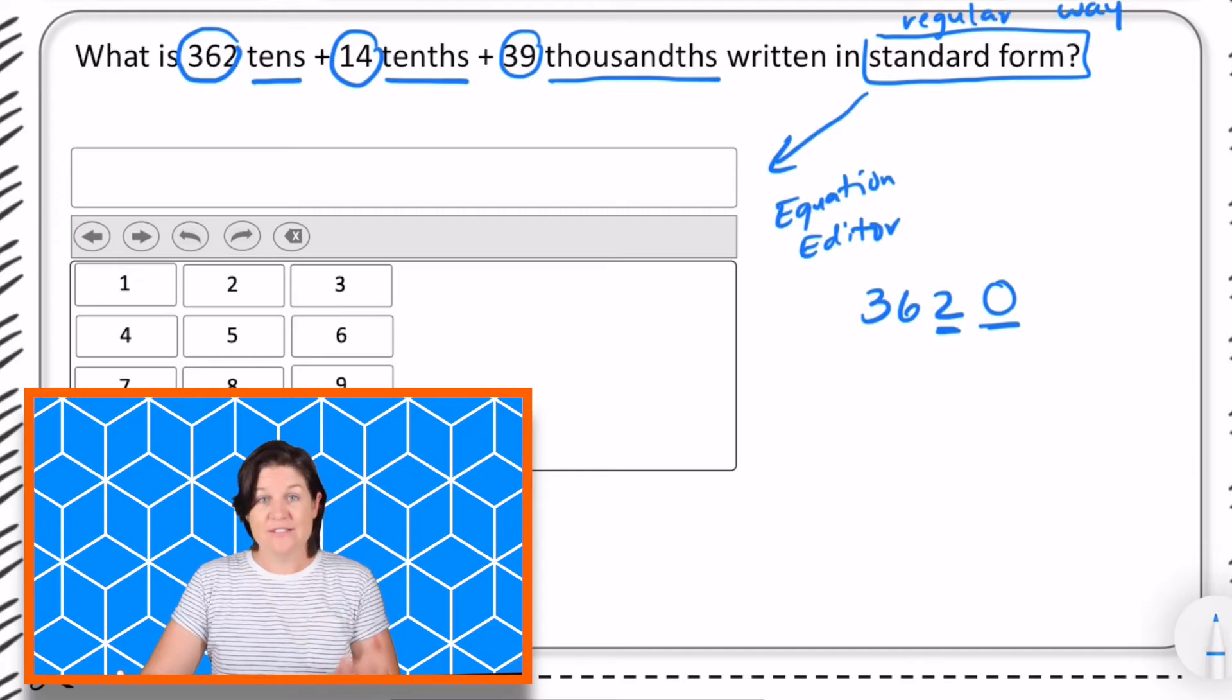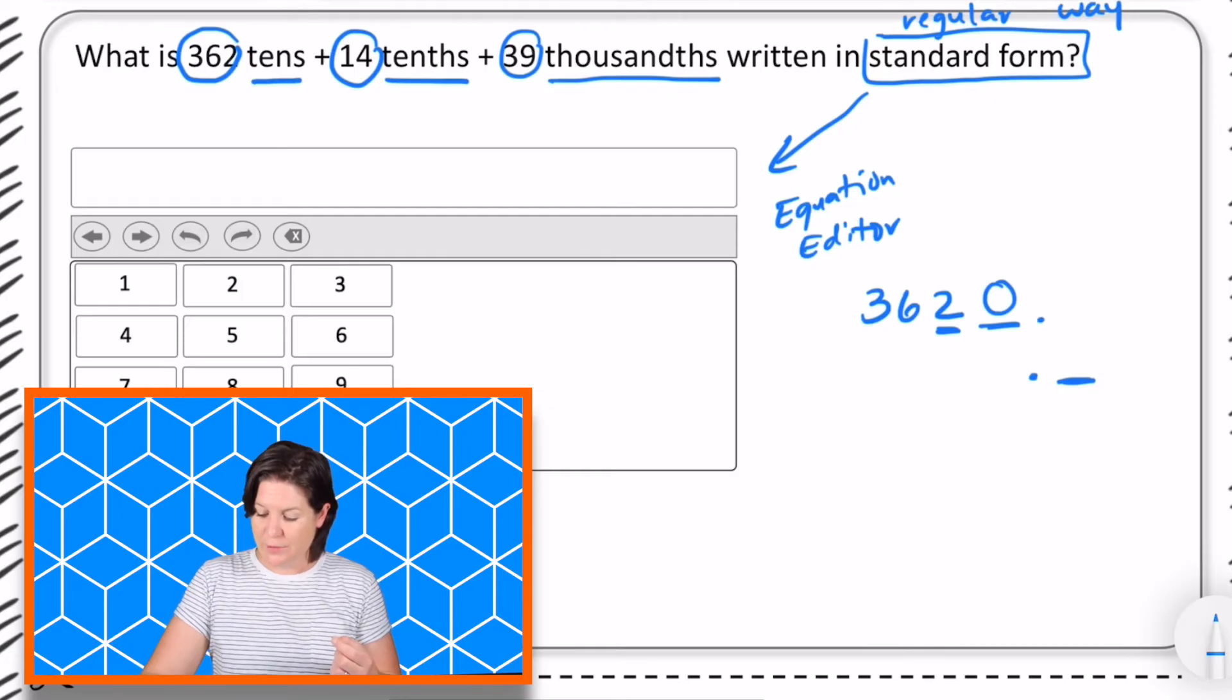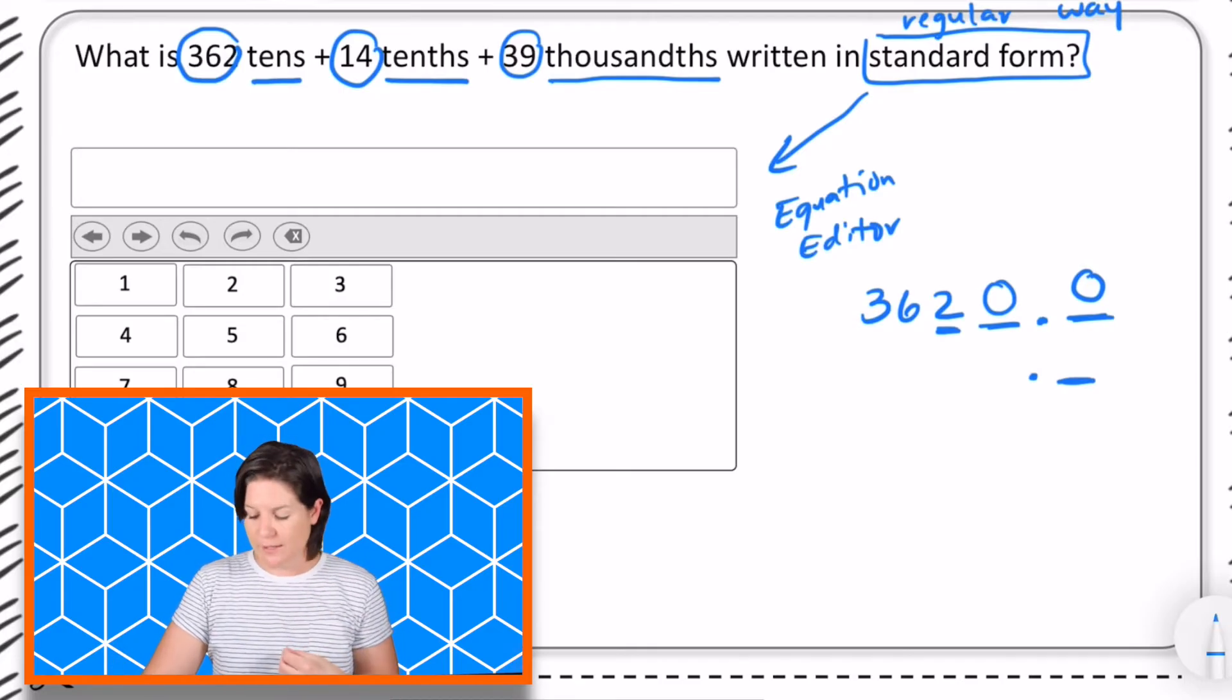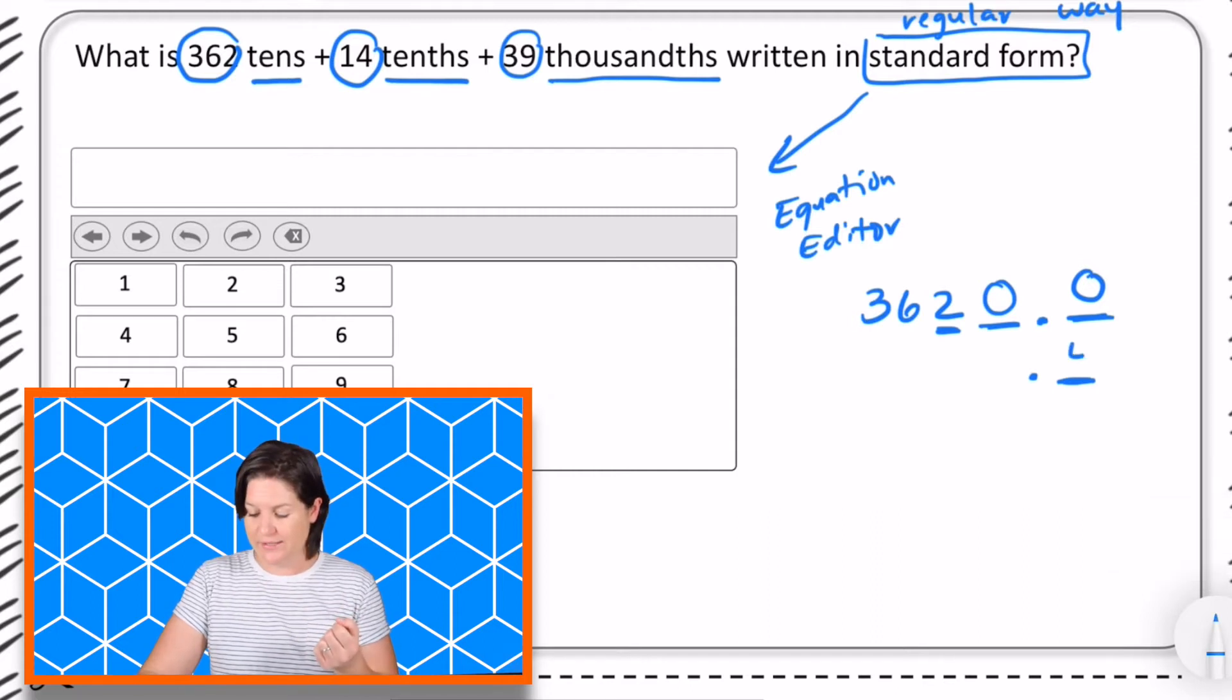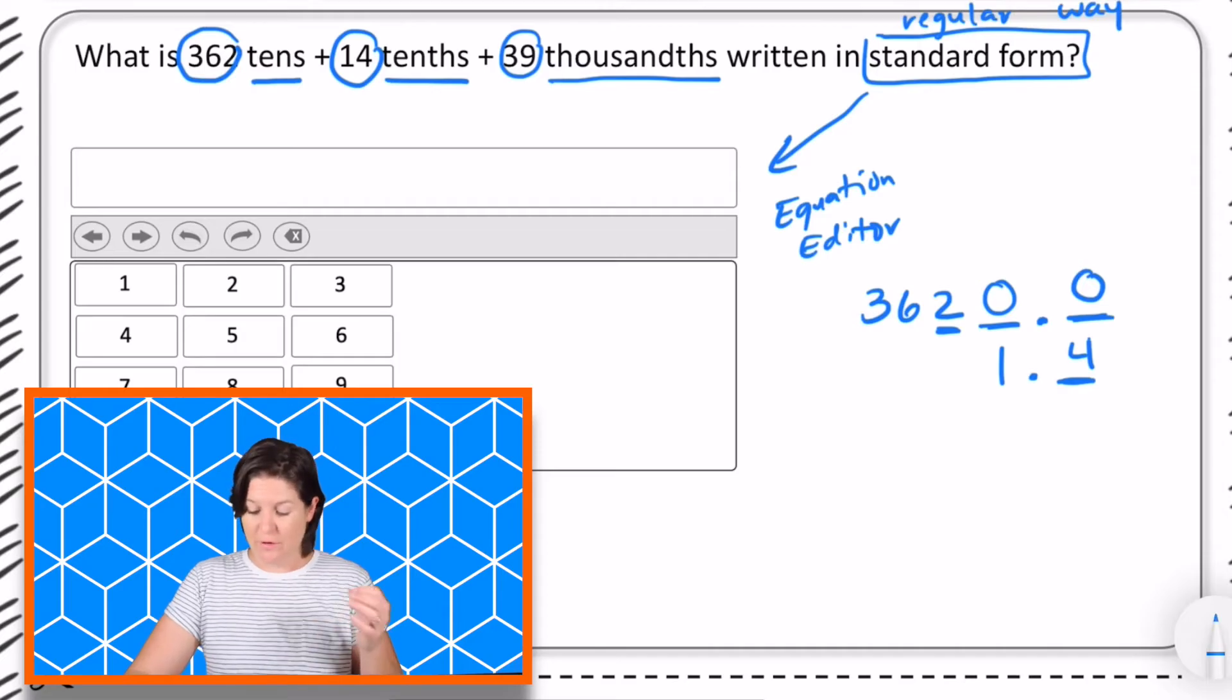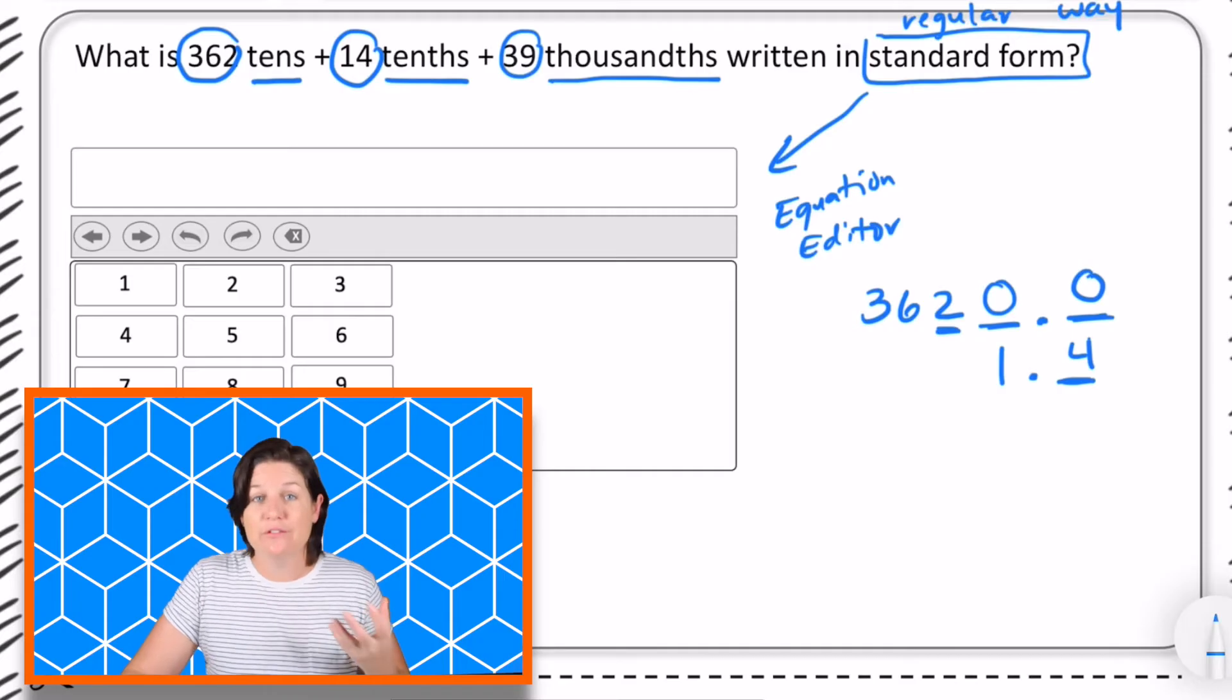We're going to add that to 14 tenths. So now in the next one we're working in the tenths place. So I'm just going to go ahead and put right there on top just to keep on going to show that there's no value behind my decimal in 3620. But now I need 14 tenths. I need the digit four to land in the tenths place right here, which means my one is in the ones place. 14 tenths is the same thing as one and four tenths.